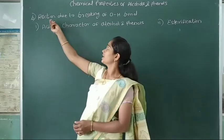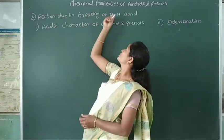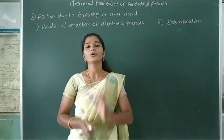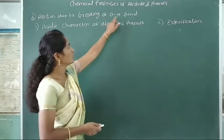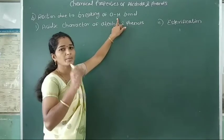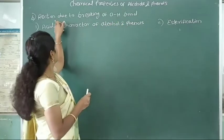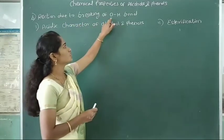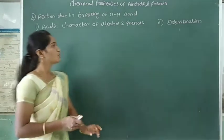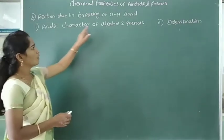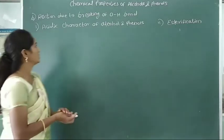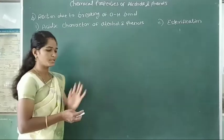The second property is the reaction due to breaking of the oxygen-hydrogen bond. Alcohol and phenol are present with a hydroxy group. The hydroxy group means the oxygen-hydrogen bond. In this section we will study two points: first, the acidic character of alcohols and phenols, and second, esterification reaction.